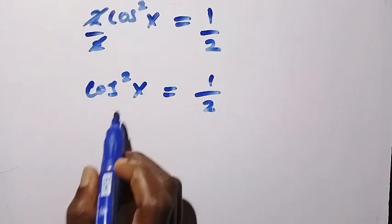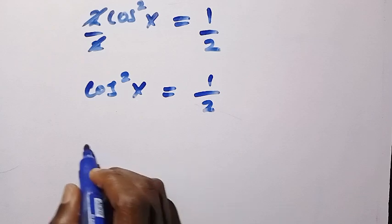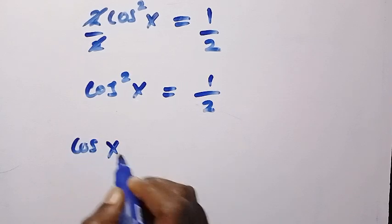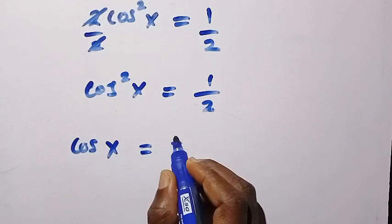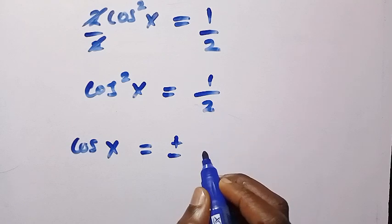Then we need to find cos x, but this is squared. By taking the square root of both sides, we have cos x equals plus or minus the square root of 1 divided by 2.